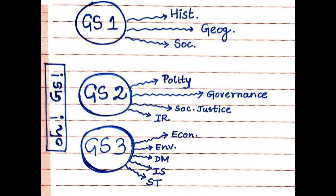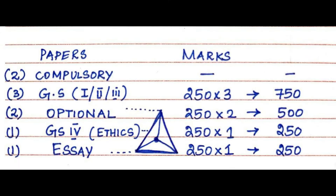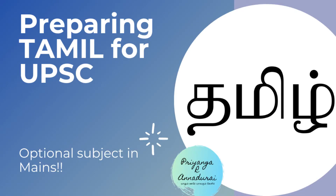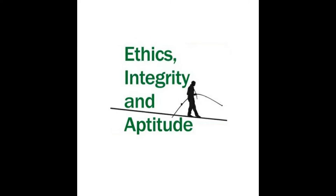Considering the next subject, which is Optional — it has two papers in the Mains examination, each of 250 marks, adding up to 500. The preparation of this optional differs from person to person depending upon the subject they choose. For example, my optional was Tamil Literature. I have made a detailed strategy with respect to the preparation of Tamil optional — please go through that.